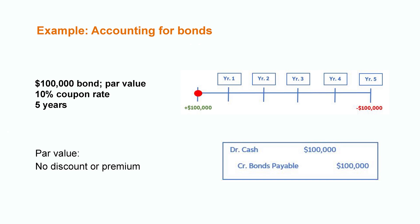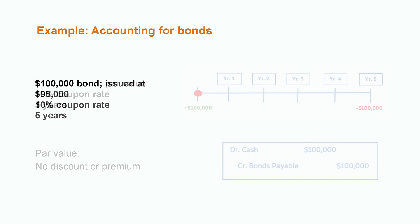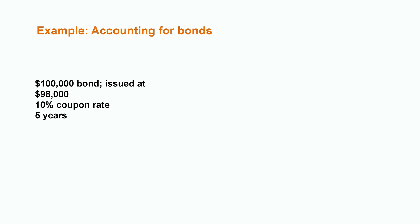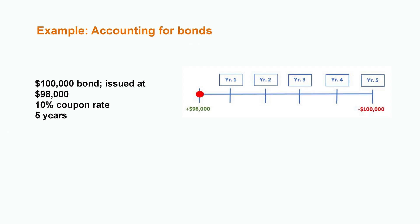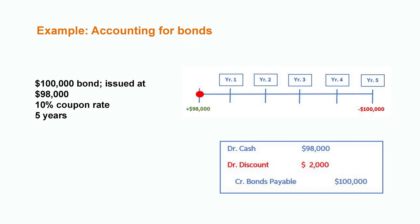Remember earlier when we were talking about how companies at times will issue bonds at a discount to attract investors? Well, let's look at the same example, but in this case the bond has been issued at a discount of 98% of its base value. Here you can see that since we have given the investors a discount, we're only receiving $98,000 in cash, but are still required to pay the whole $100,000 back at the end of the five years. The accounting transaction is very similar to the previous one where we're recording the funds received and the bonds payable. However, in this case we have also added the $2,000 discount into the equation.